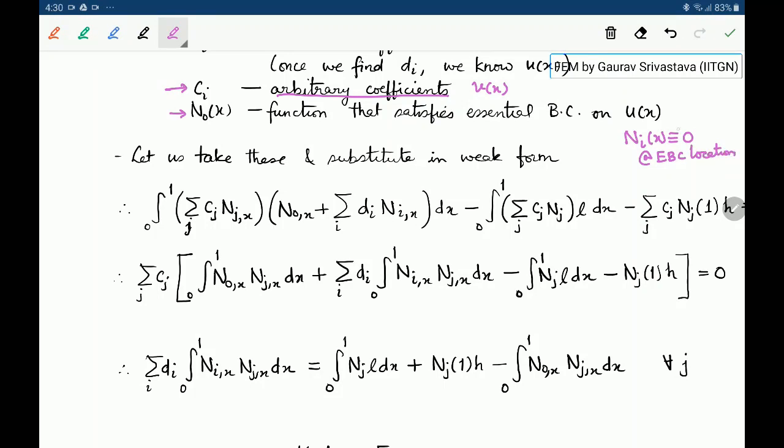This ensures that V of X will be 0 at the essential boundary conditions locations, which is an admissibility requirement. And by adding this function N₀ to the expansion of U of X, we ensure that the essential boundary conditions are satisfied.